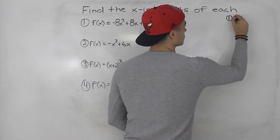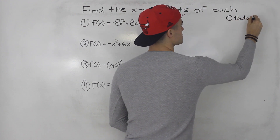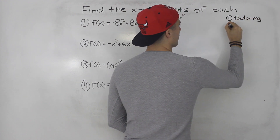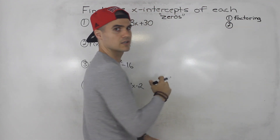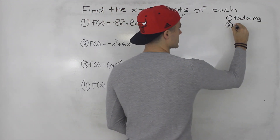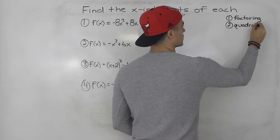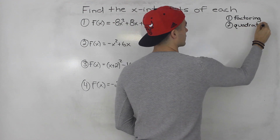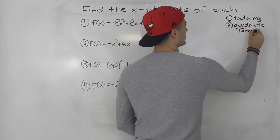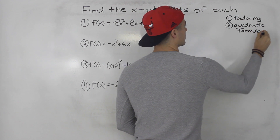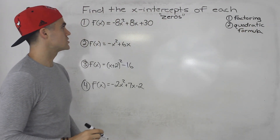You can either do it through factoring — that's what I always look at first. But if factoring is impossible or you're dealing with too big of numbers, worst case scenario you could always throw everything into the quadratic formula. So I'm always looking at one of those two strategies.